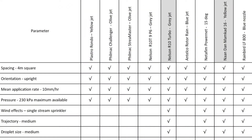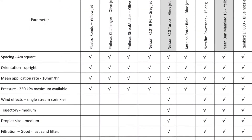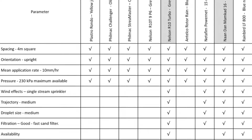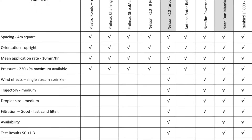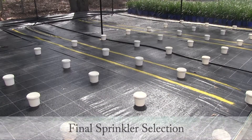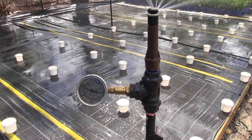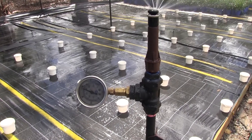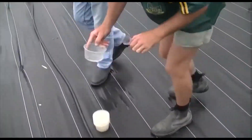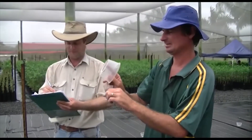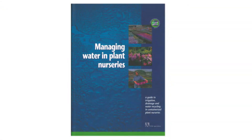Choose a sprinkler that meets all the requirements in the selection steps, is readily available for testing, has replacement parts available, fits within the budget and has acceptable maintenance requirements. Once all the factors have been taken into consideration, the final choice of sprinkler is dependent on the efficiency of each sprinkler and layout. A trial area can be set up and run to determine which sprinkler has the best uniformity and which ones meet minimum best management practice. Further information on selecting and designing sprinkler irrigation systems can be found in the publication Managing Water in Plant Nurseries.